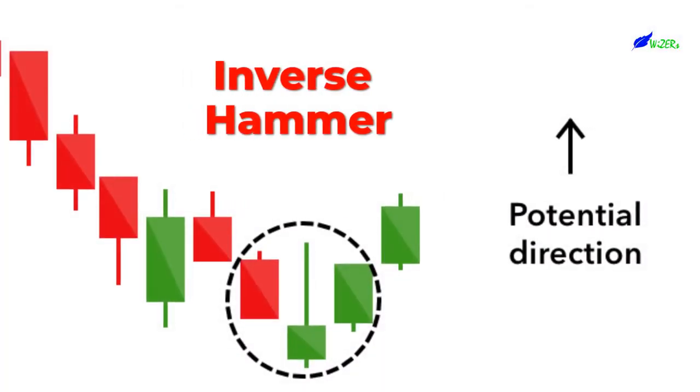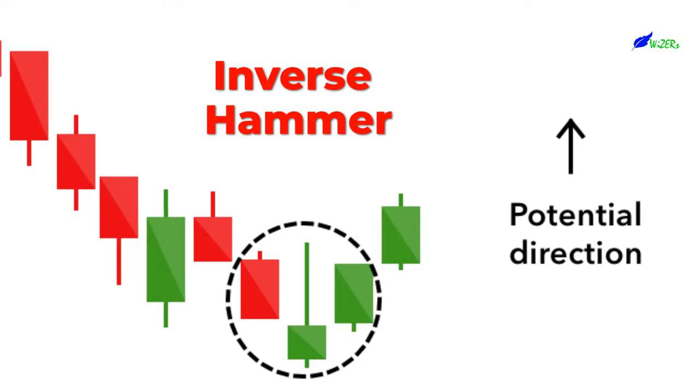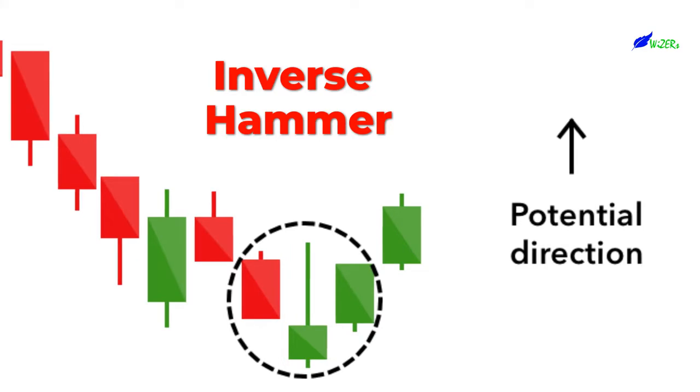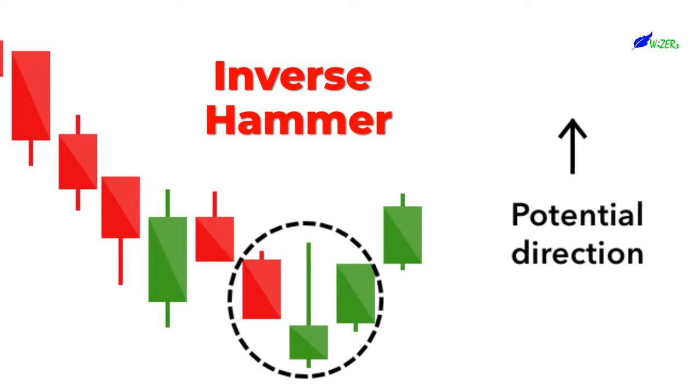Inverse hammer. A similarly bullish pattern is the inverted hammer. The only difference being that the upper wick is long, while the lower wick is short. It indicates a buying pressure, followed by a selling pressure that was not strong enough to drive the market price down. The inverse hammer suggests that buyers will soon have control of the market.